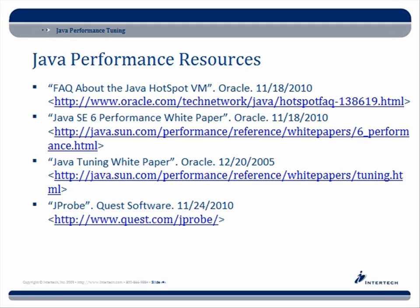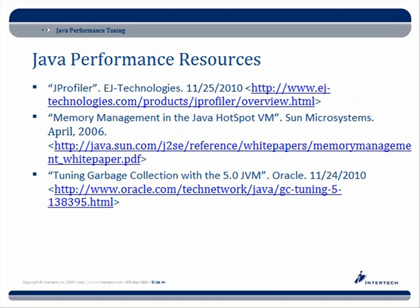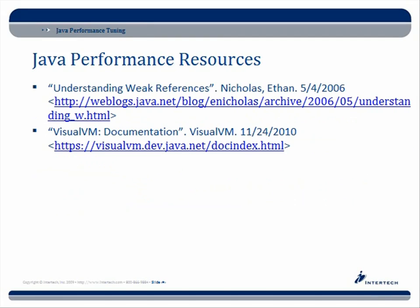There's also a link to check out some commercial software for profiling, like J-Probe. J-Profiler is another popular one. There's more on memory management and tuning the garbage collection — if you want to figure out what ergonomics you can use to tune garbage collection, they're listed there. There's also a resource on understanding weak references, which is one of the best explanations available for how and when to use weak references such as the WeakHashMap, and of course the documentation for VisualVM.